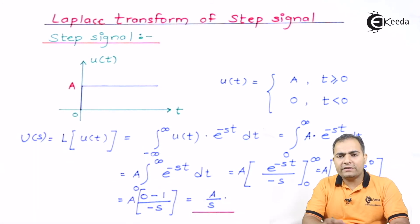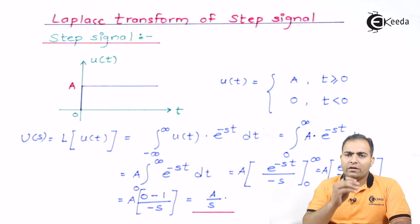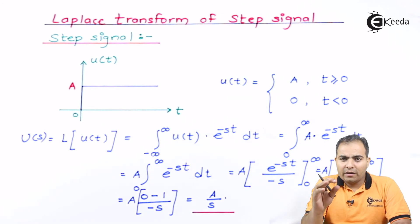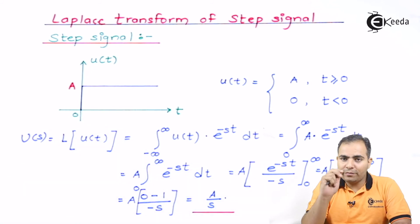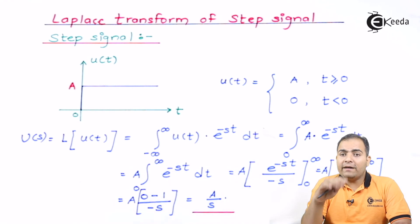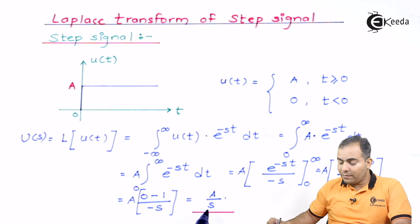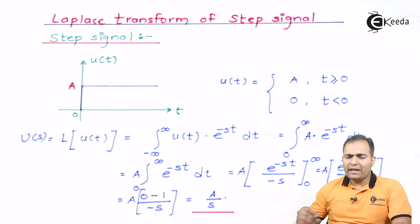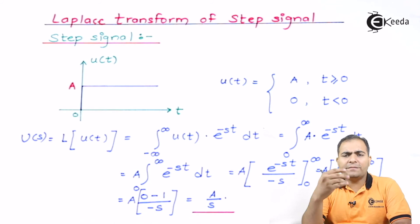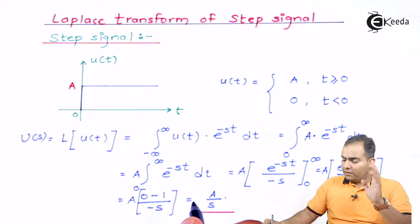So if amplitude A equals one, the function is called a unit step signal, and its Laplace transform is always one over s. If the amplitude is not one — for example, if it is two, then the Laplace transform is two over s; if it is three, then three over s. Whatever amplitude is given, substitute it in the place of A to get A over s.